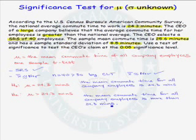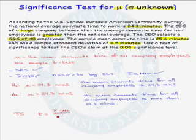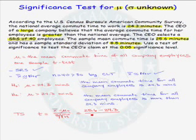We are now ready to write our test statistic. In the one-sample t-test, the test statistic is t equals x-bar minus mu-naught, divided by s over the square root of n. For our problem, x-bar is 25.6, mu-naught is 24.3, s is 8.5 minutes, and n is 40. Putting this into the calculator, our test statistic t equals 0.967.